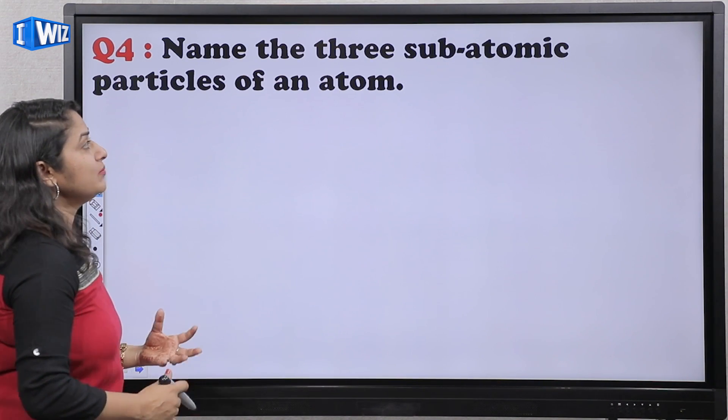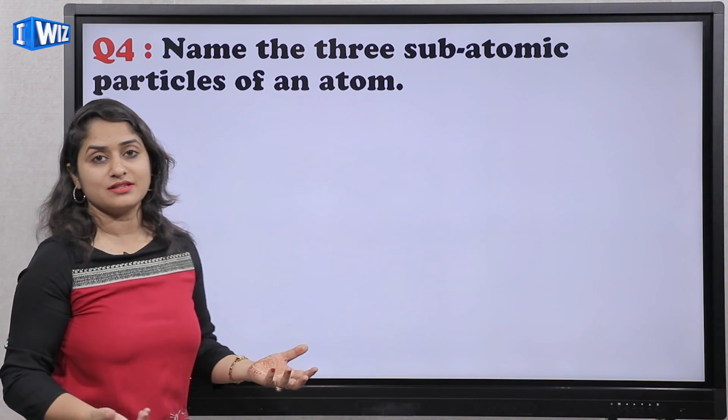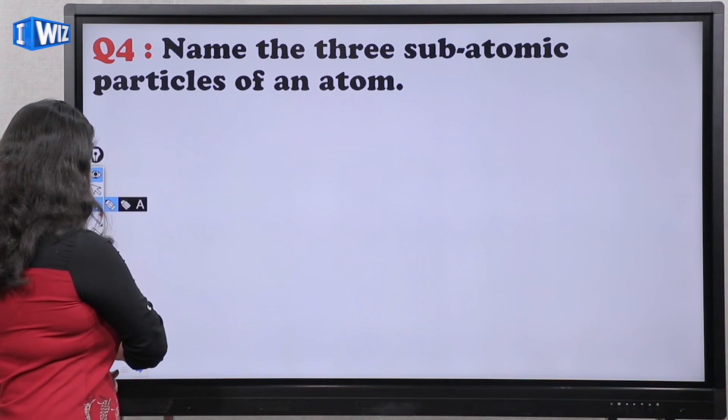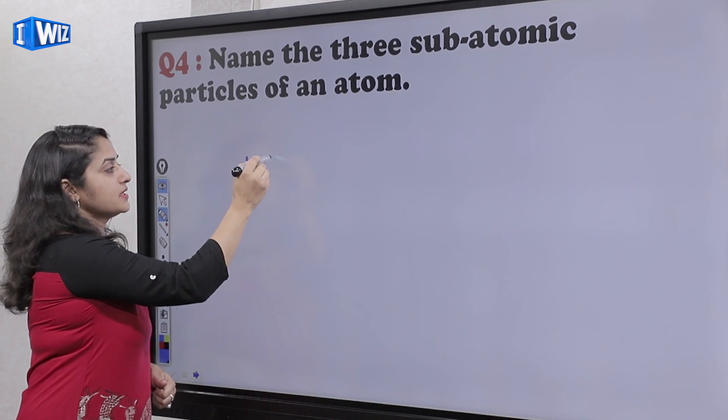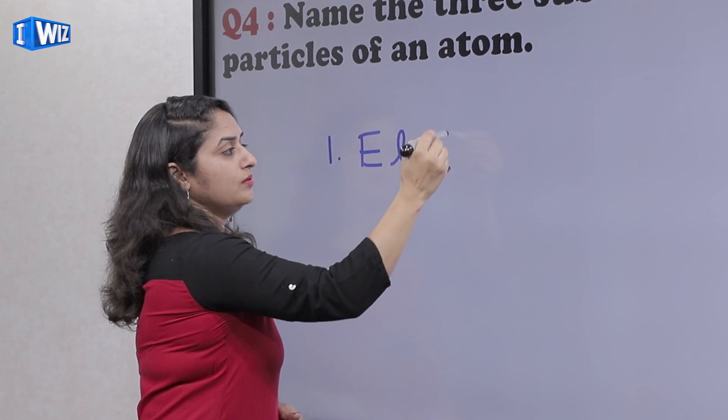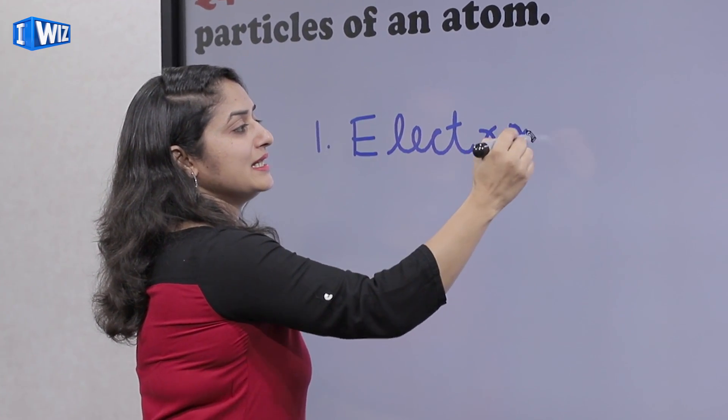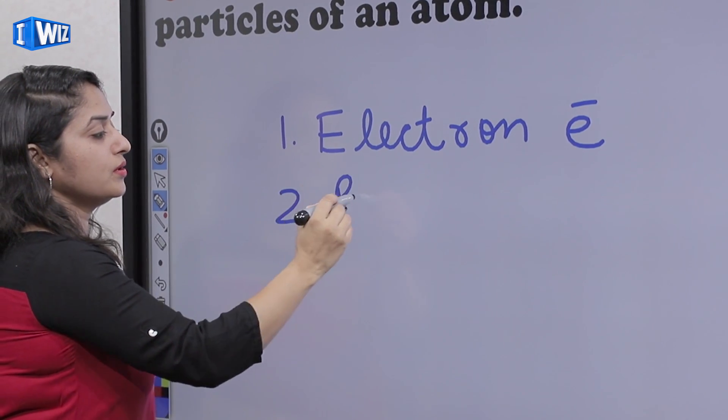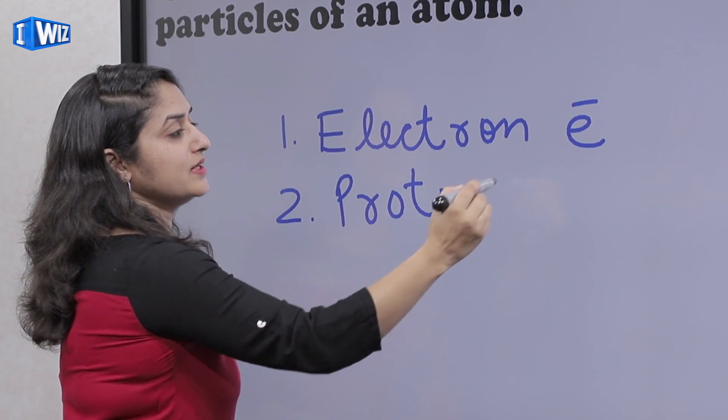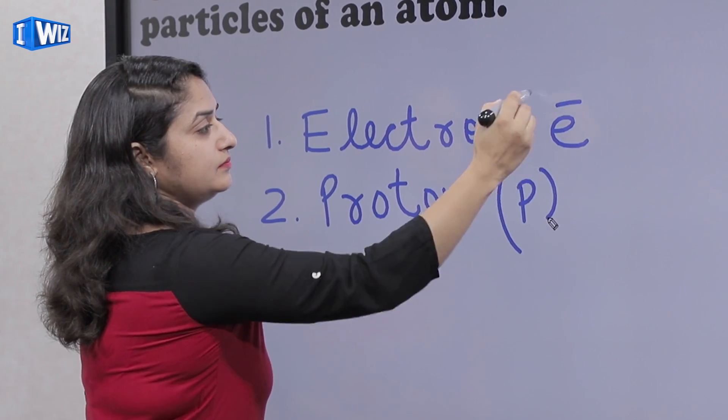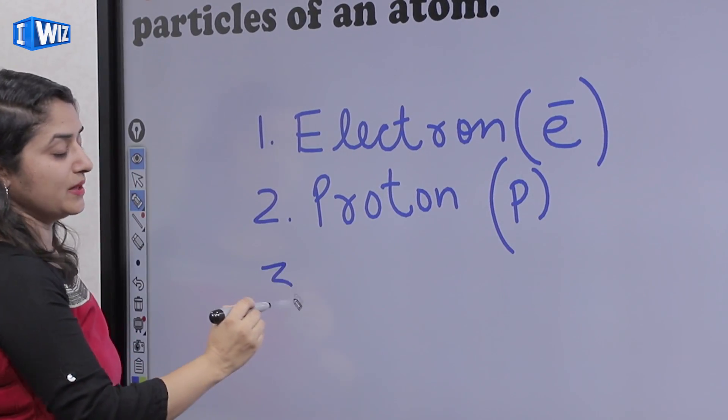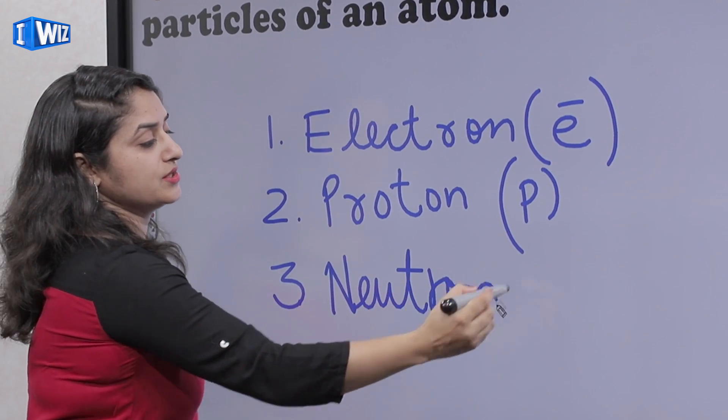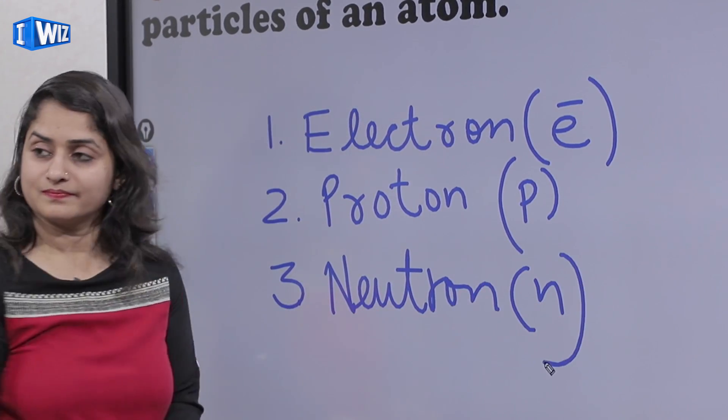Next is: Name the three subatomic particles of an atom. Abhi hum ne pichle se pichle question mein bhi isko kia, ki subatomic particles kis ko bolte hain? Subatomic particles bolte hain electron ko, joki hai negatively charged, plus proton ko, joki hai positively charged, aur tisra subatomic particle hai neutron, which does not have any charge.